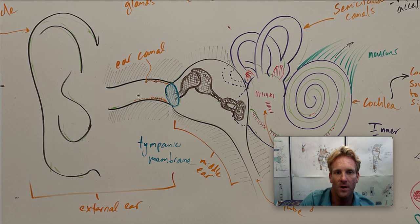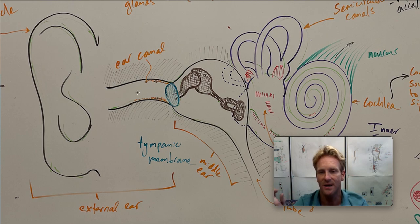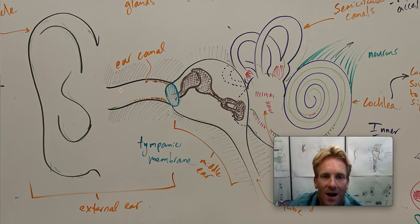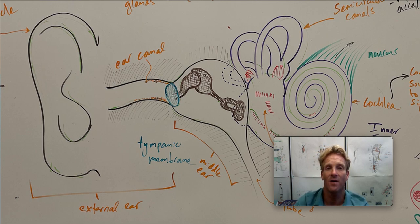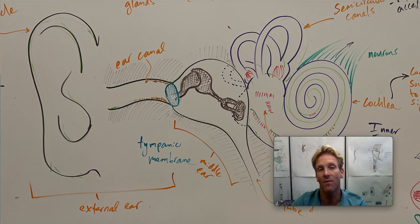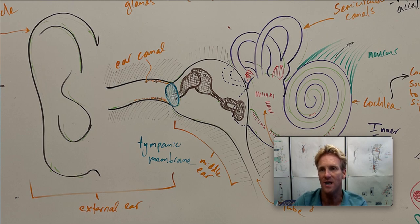The ear canal is not very long — it's like a centimeter, centimeter and a half long. It's going to carry these sounds to the base of the ear canal, which is a thin membrane of skin called the tympanic membrane, or the eardrum. As these sounds come in, they're going to cause that tympanic membrane to beat back and forth, and this tympanic membrane, as it beats back and forth, is going to capture important information about that particular sound.